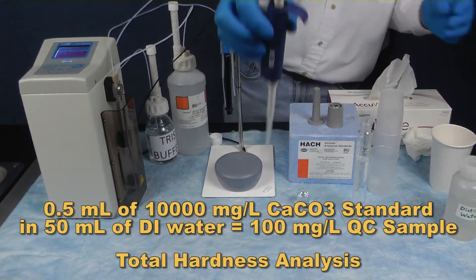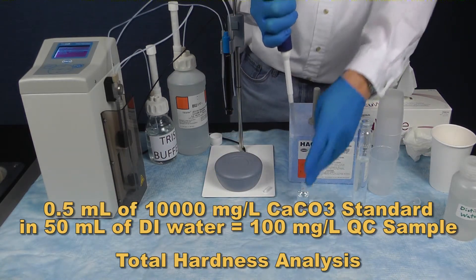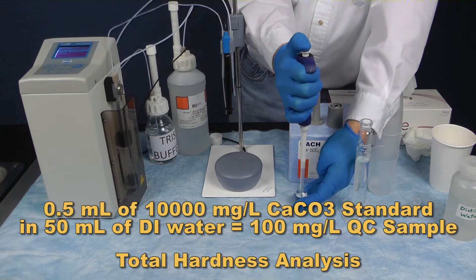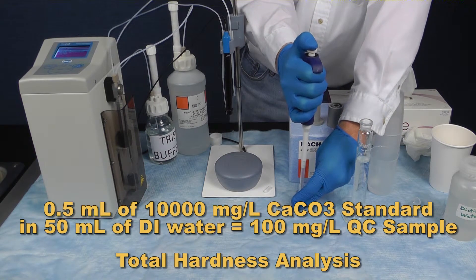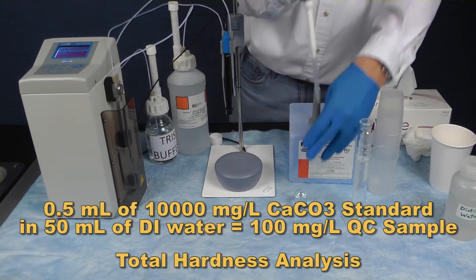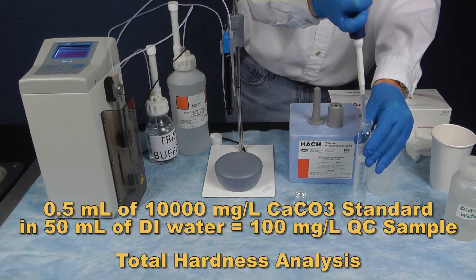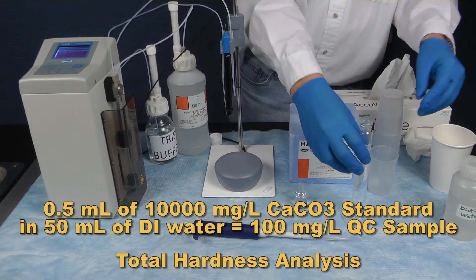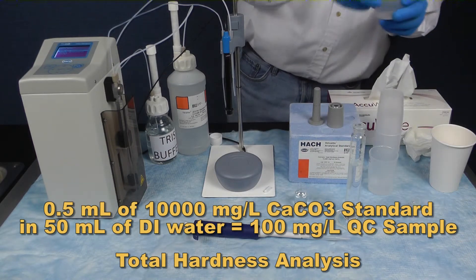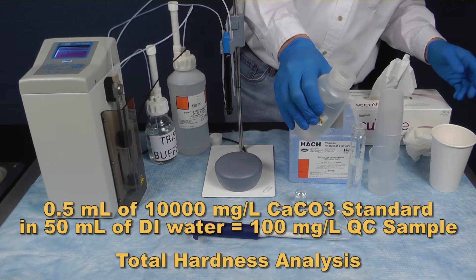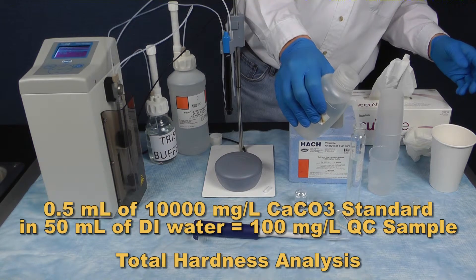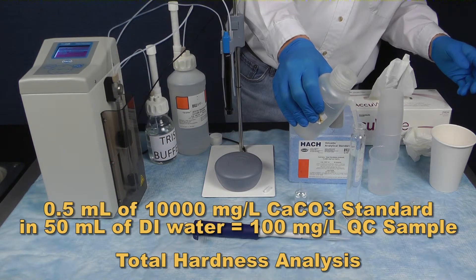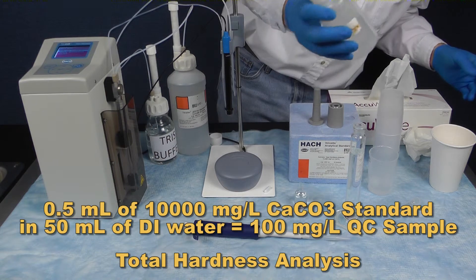Pipette 0.5 mL of 10,000 milligrams per liter CaCO3 standard into approximately 40 mL of DI water. Bring the volume of sample to 50 mL using DI water. Mix well, then pour into a clean sample cell.